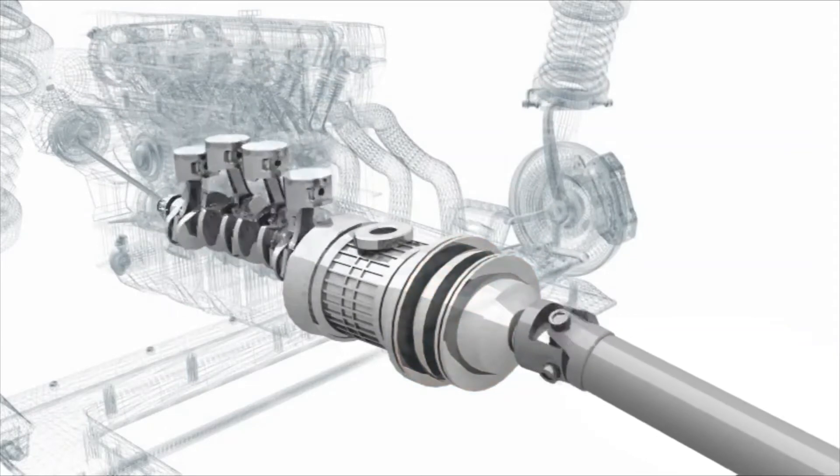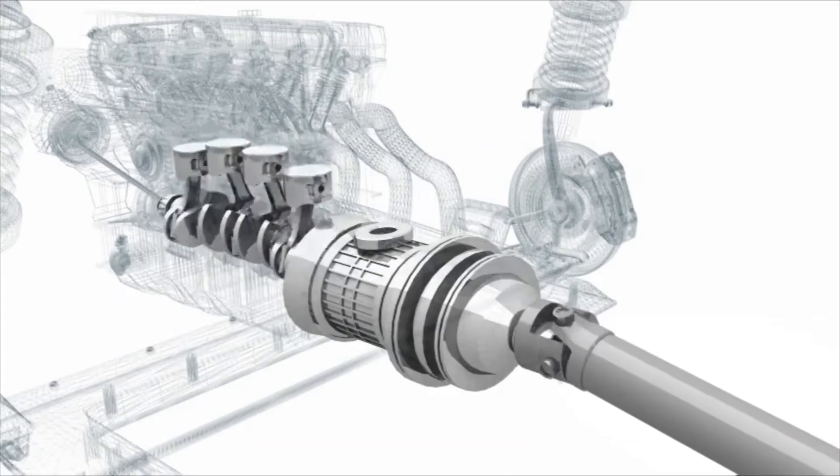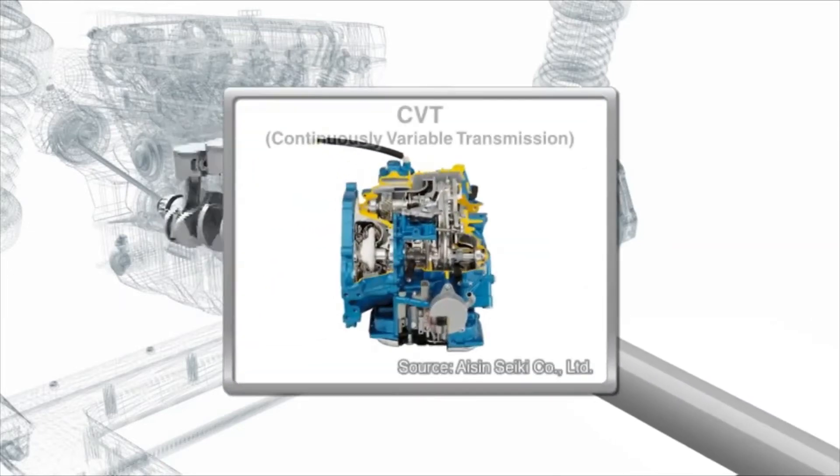In an automatic transmission, or AT, the gear ratio is stepped and fixed and not necessarily optimized for the engine. Continuously variable transmission, or CVT, addresses this problem.